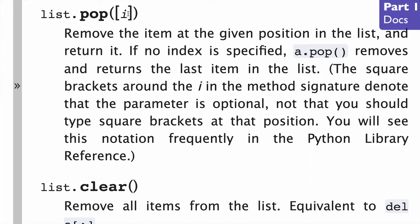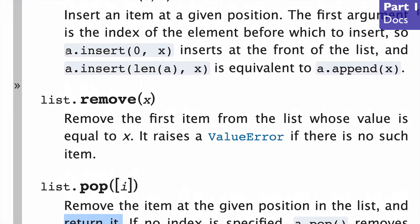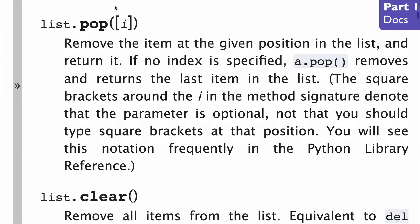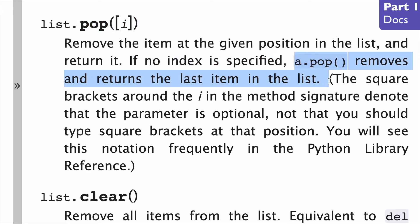Let's talk about the two actions that are going to take place with the pop list method. The first is that you're going to remove the item from the list, and the second is that you're going to return it. The fact that you return that item is what makes it different than the remove list method. And if no index is specified, pop removes and returns the last item in the list.